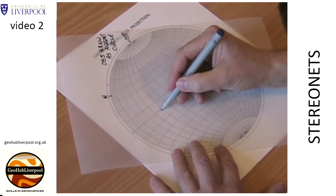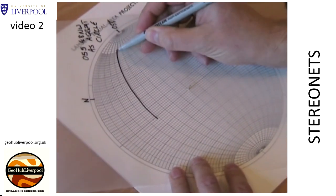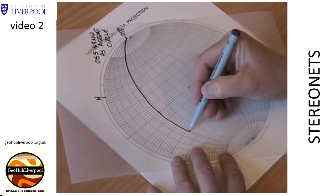Mark the point where the dip is 48 degrees to the northwest. Hold the tracing paper in place and draw along the great circle that this point lies on.